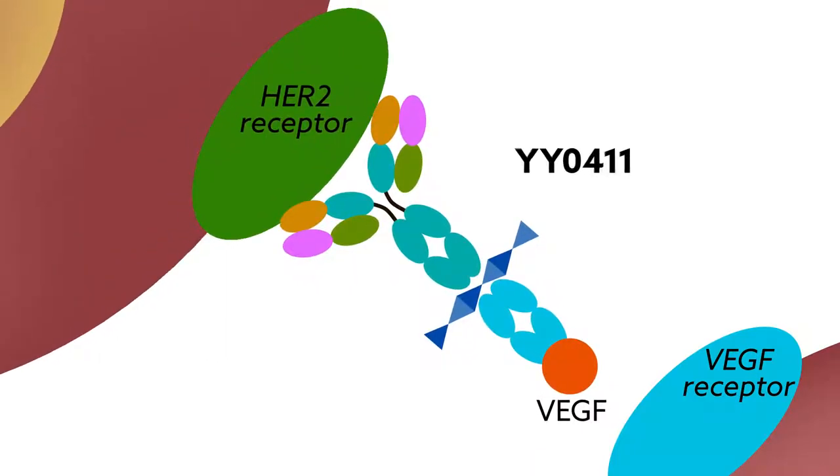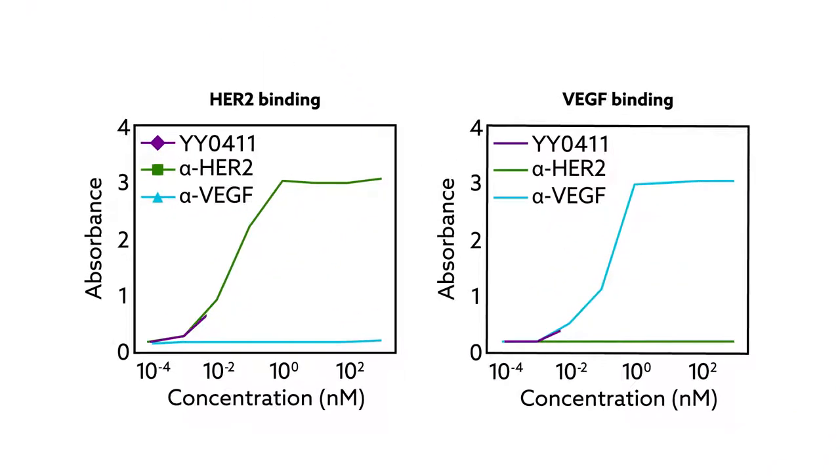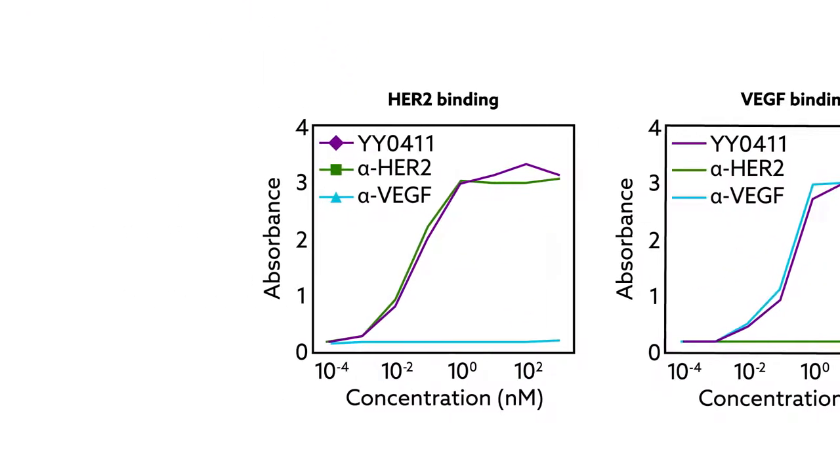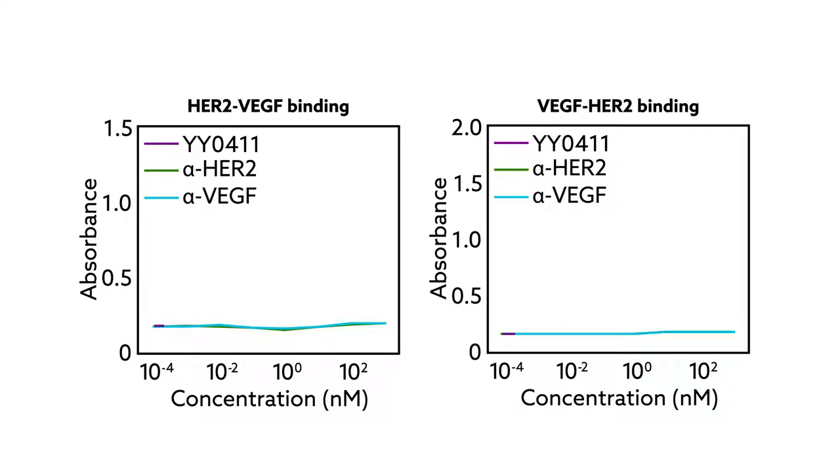The result was YY0411, the first bispecific antibody designed to treat lung cancer. Tests showed that the two-in-one antibody could bind well to each of its targets. In further experiments, the dual antibody proved capable of binding to both proteins at the same time in a dose-dependent manner.